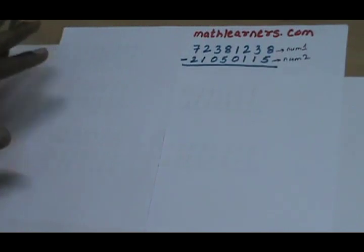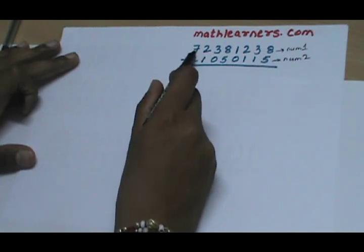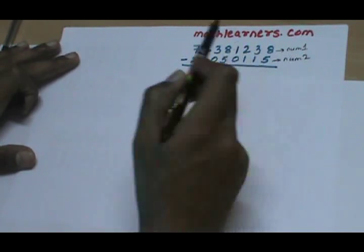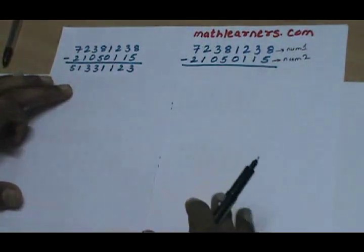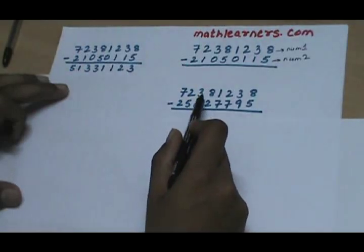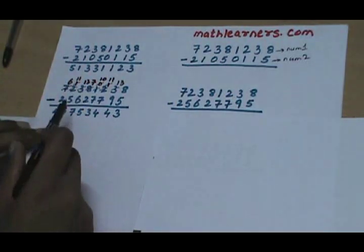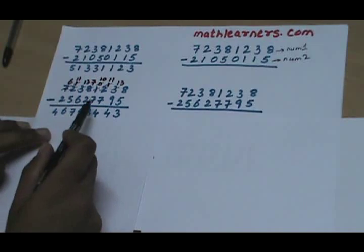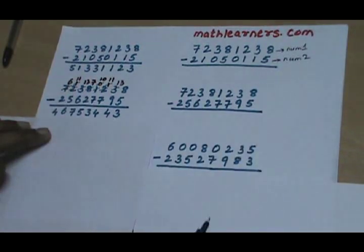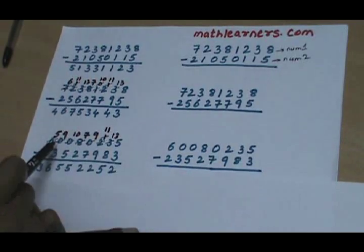Suppose we want to subtract two numbers: Number 1 minus Number 2. When each digit of Number 1 is greater than the corresponding digit of Number 2, the subtraction is straightforward. But the problem arises whenever the digits in Number 2 are greater than those of Number 1, as lots of carry forwards are required, and many people are not comfortable with carry forwards.